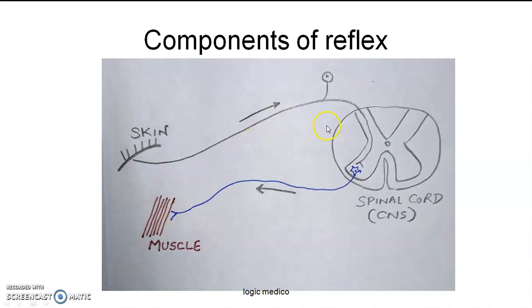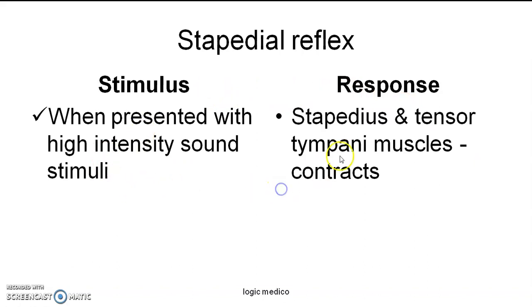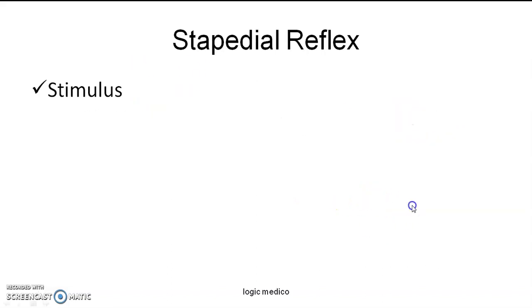A motor neuron beginning from the CNS coming out is called the efferent neuron. Afferent means towards the CNS; efferent means away from the CNS. The muscle responds by contraction, so the muscle is the effector organ. Coming to stapedial reflex: the stimulus is high intensity sound stimuli, and the response is contraction of two muscles — the stapedius muscle and the tensor tympani muscle.